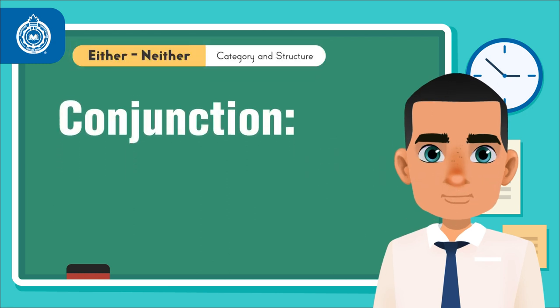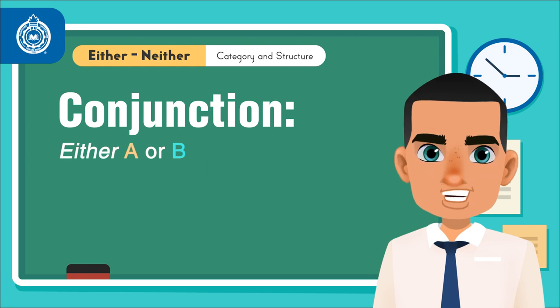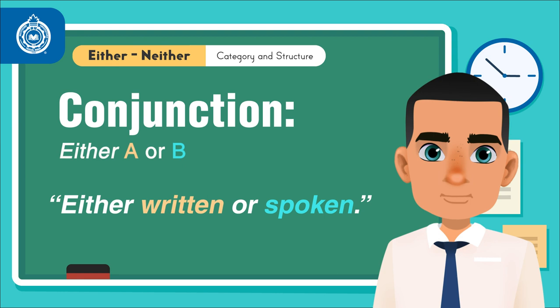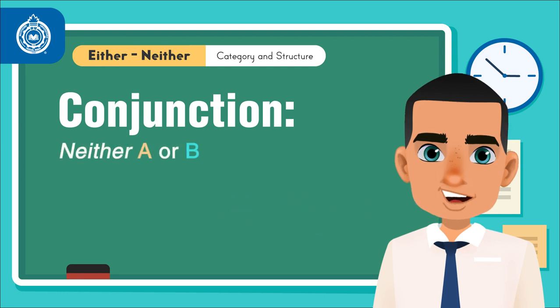Conjunction. Either A or B. For example, either written or spoken. Neither A or B. Neither written nor spoken.